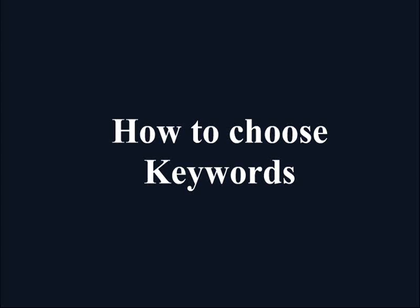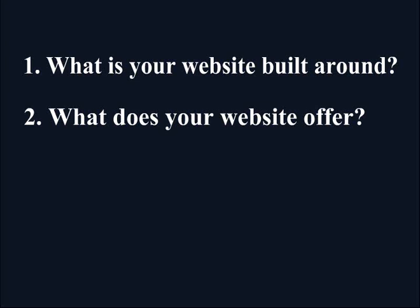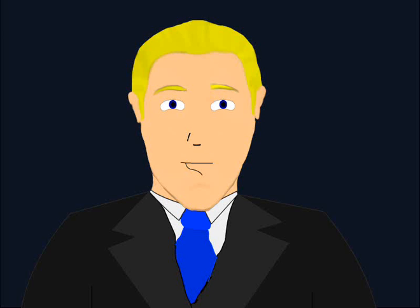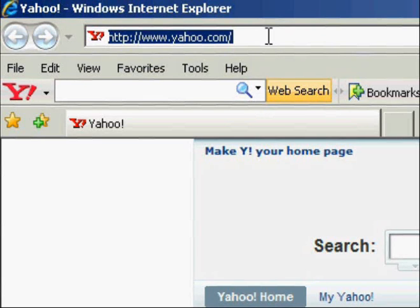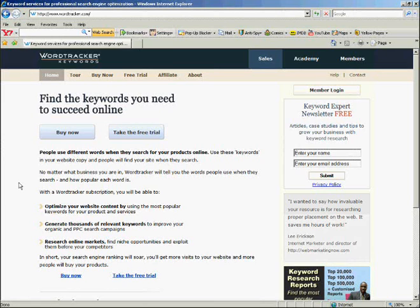How to choose your keywords. Ask yourself: what is your website built around? What does your website offer? How do you expect people to find it? Which keywords might they use? From these questions, you come up with the keywords. Most of the time, you will have more than one keyword that has the same meaning, but you don't know which one to choose. In this case, you can look up both words with WordTracker at www.wordtracker.com. With this, you can see which words are most searched for, and use that one.